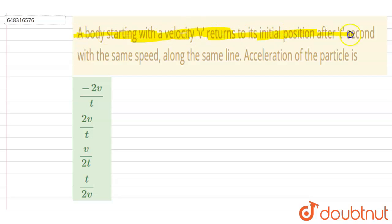returns to its initial position after three seconds with the same speed along the same line. The acceleration of the particle is? So if you see, the final velocity is v with a negative sign because it is returning, and the initial speed is v.